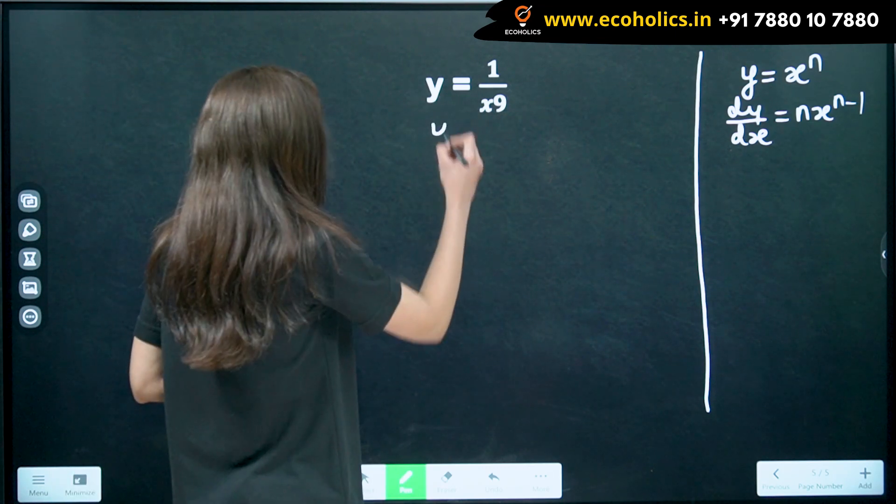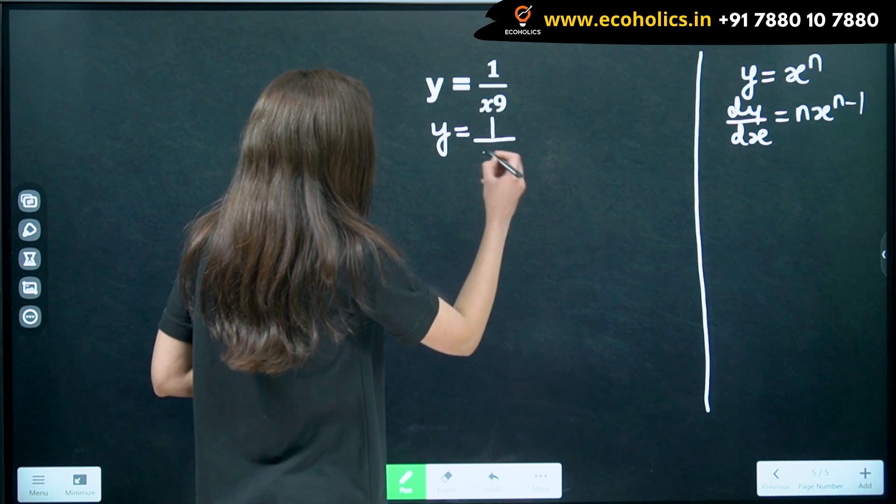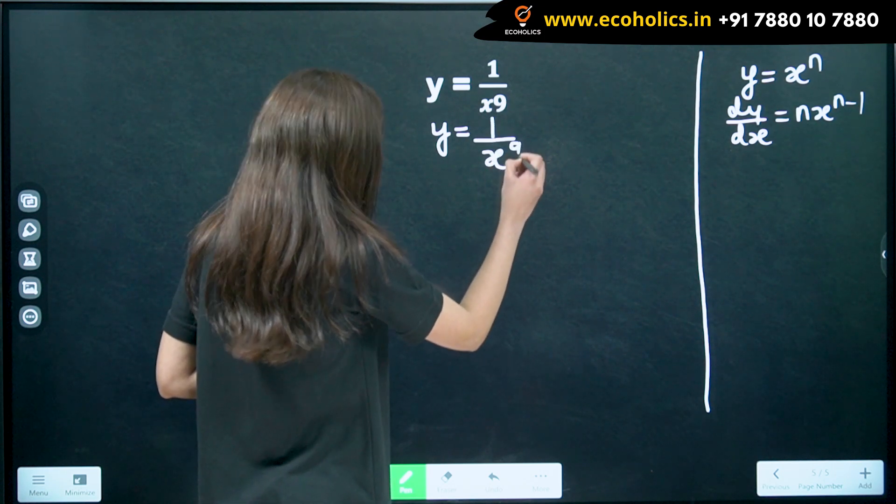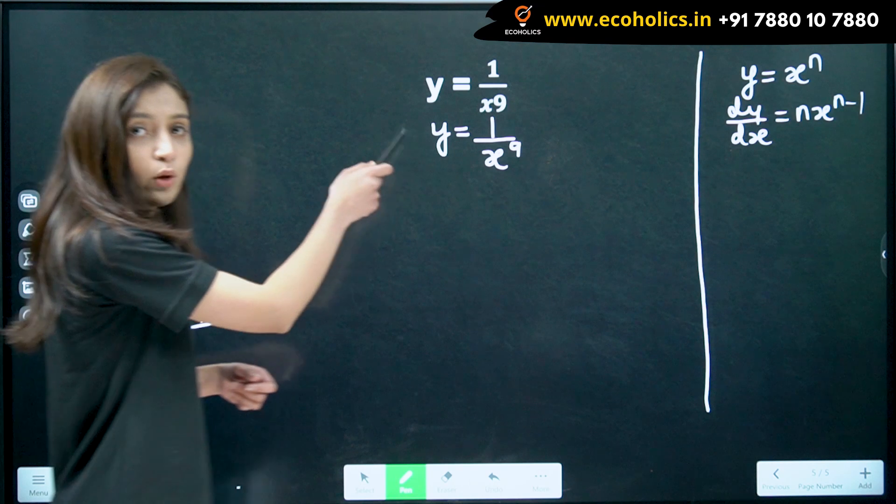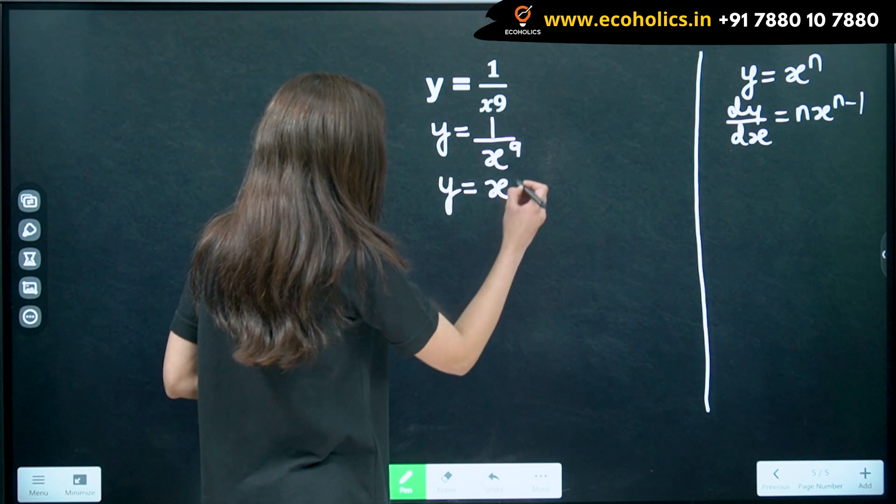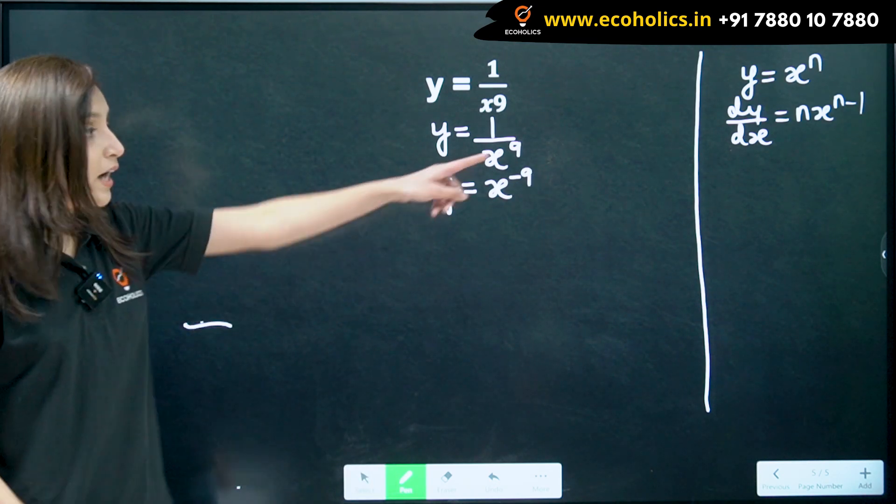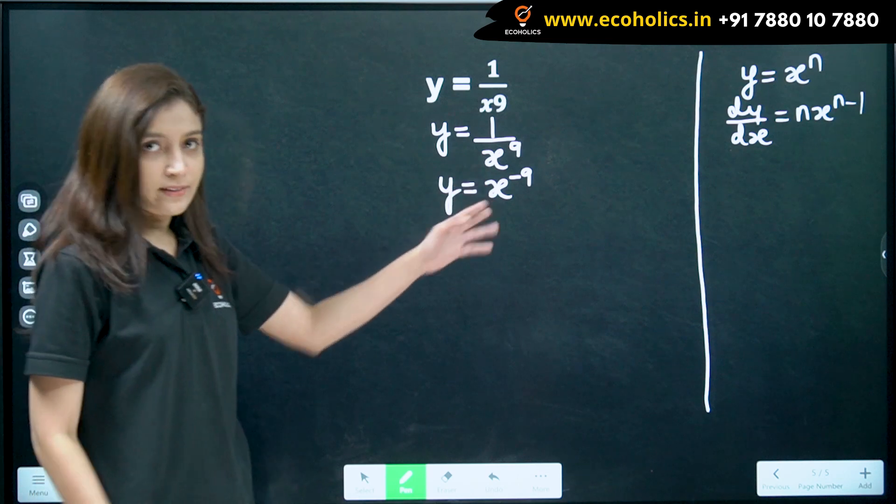So, in this case, y is equal to 1 by x raised to 9. Now, this can also be written as, y is equal to x raised to minus 9. Now, in this case, our n is equal to minus 9.